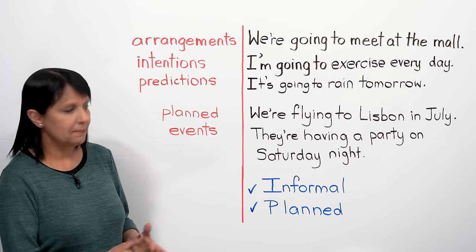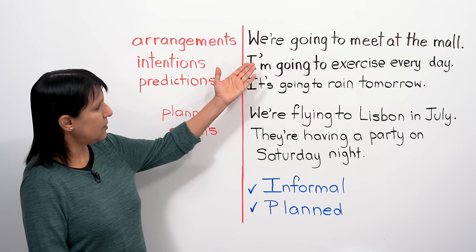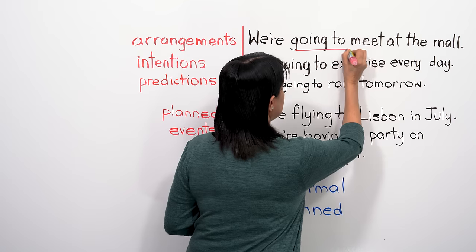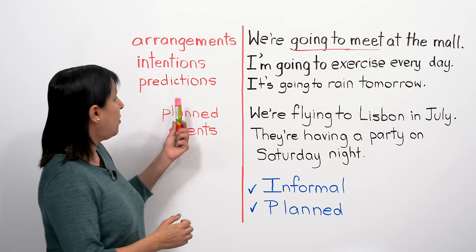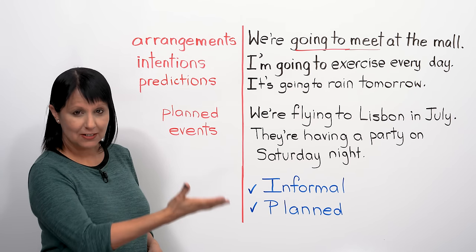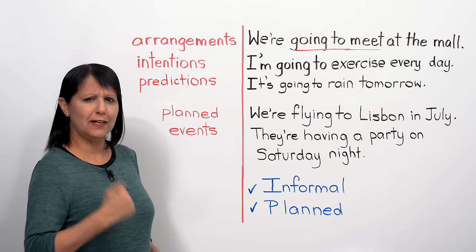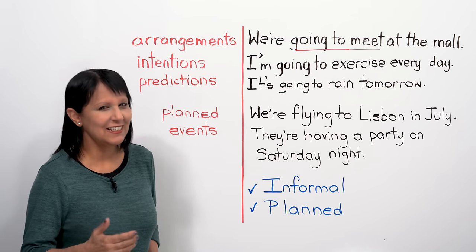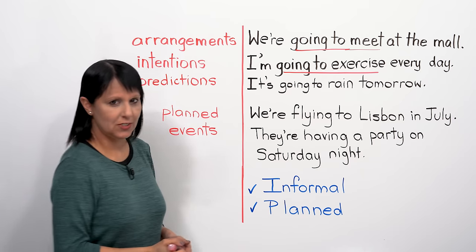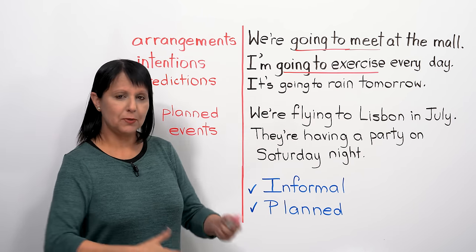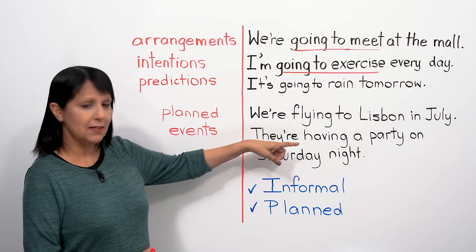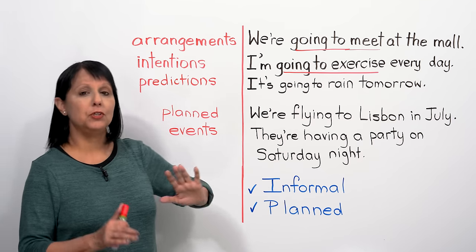When you're talking about arrangements, you have to make them in advance. For example, 'We're going to meet at the mall' — here we're using 'going to meet.' Or for intention — something you plan to do, something you want to do — for example, 'I'm going to exercise every day' or 'I'm going to study English every day.' These are examples with 'going to,' but I could say these using present continuous too, because they're used in the same way.